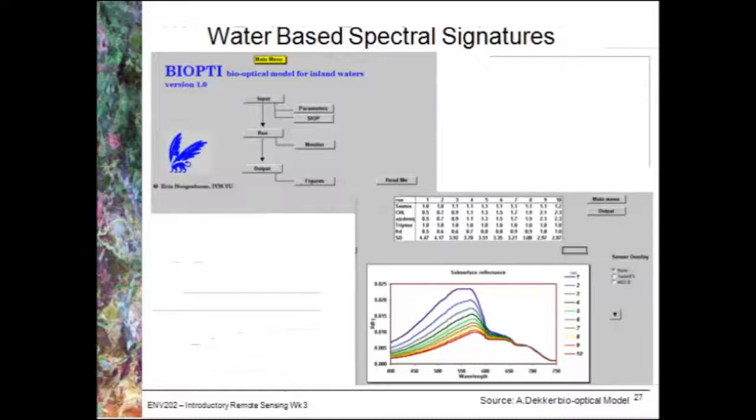As we looked at Liberty for vegetation spectral signature simulation, there are also programs to look at water bodies as well. This is just an example you can have a look at which will allow you to change the amount of dissolved organic and inorganic matter in the water column and have a look at what that does to a spectral signature. You can also change the depth for example.